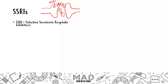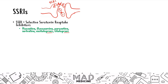Certain drugs you definitely need to know — commit these to memory because they are very important medications. Fluoxetine is the main drug you might see, but you can also see fluvoxamine, paroxetine, sertraline, escitalopram, and citalopram. The suffix 'pram' for escitalopram and citalopram is different from the rest.